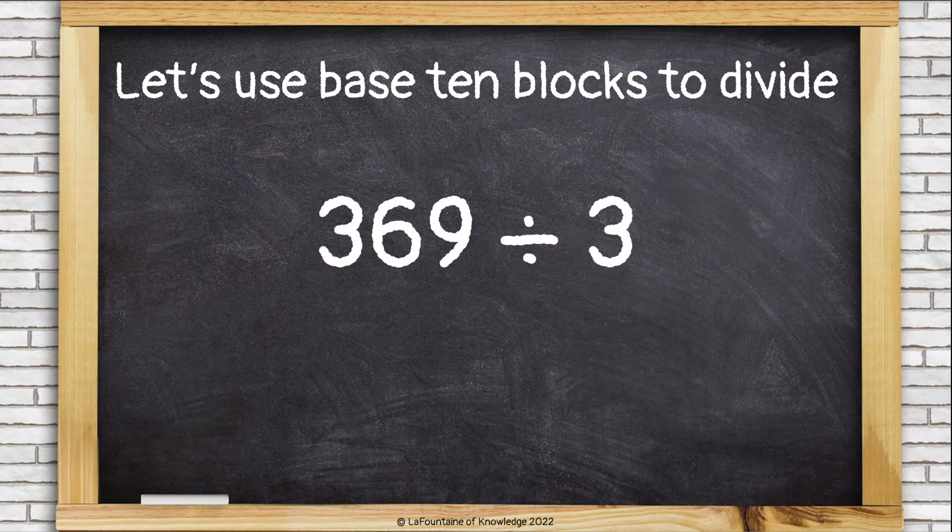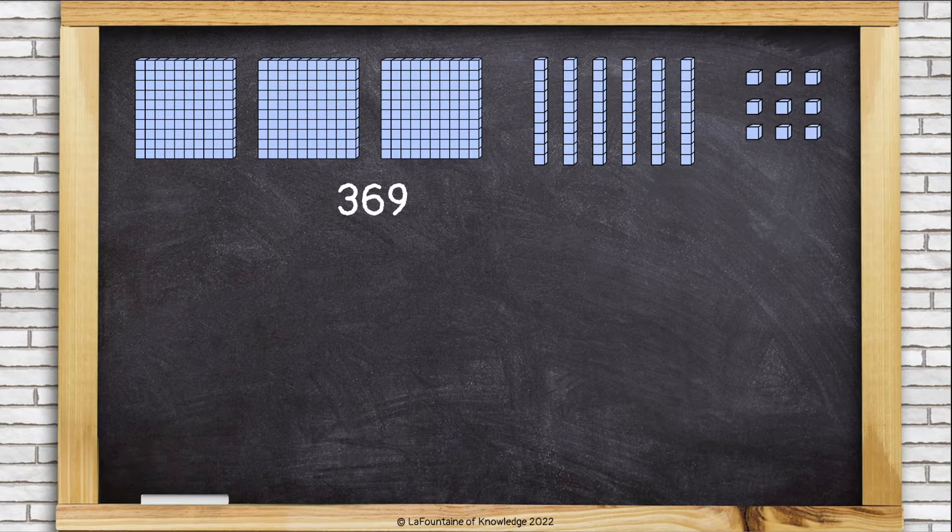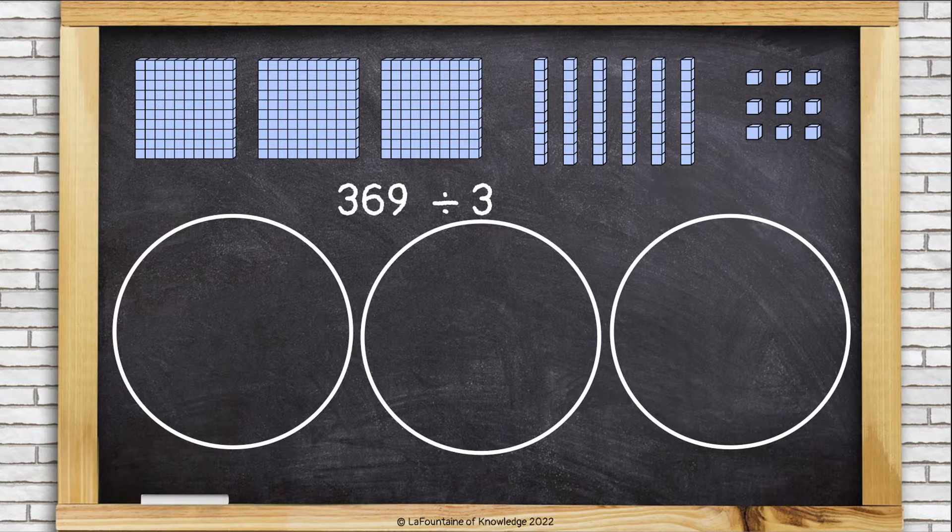Let's use base 10 blocks to divide 369 divided by 3. So we start with 369 in base 10 blocks. That's 3 hundreds, 6 tens, and 9 ones. We're dividing by 3, so we are going to need 3 groups to divide the blocks into.